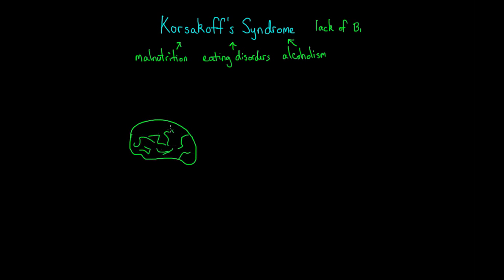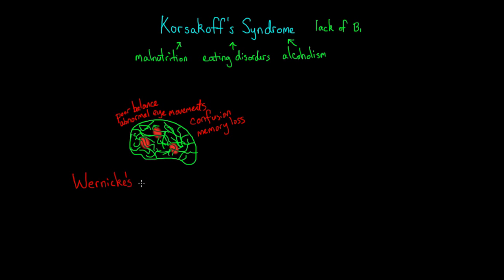At first, a person developing Korsakoff syndrome might have damage to certain parts of the brain, resulting in poor balance, abnormal eye movements, mild confusion, and or memory loss. At this stage, it's actually called Wernicke's encephalopathy, which is the precursor to Korsakoff syndrome.